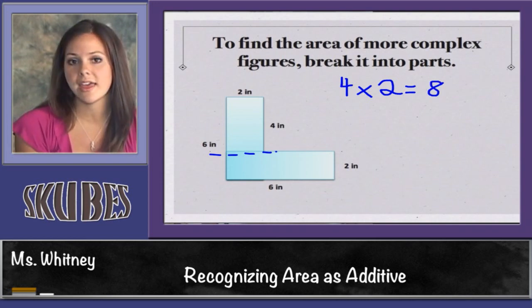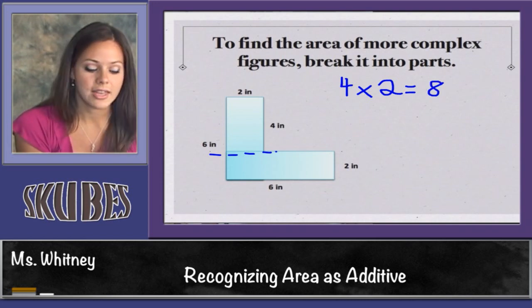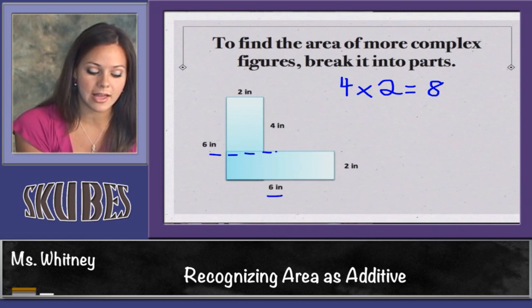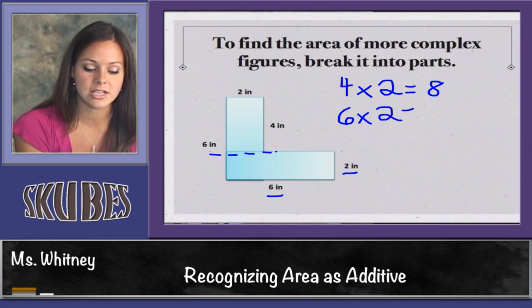And that tells me the area of the first rectangle. Now I can look at the bottom and multiply 6 times 2, which is equal to 12.